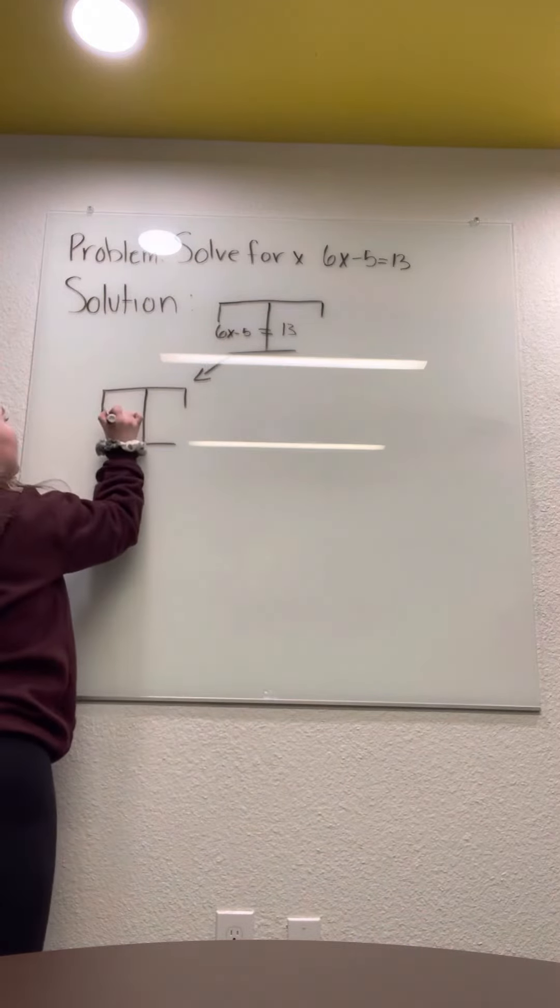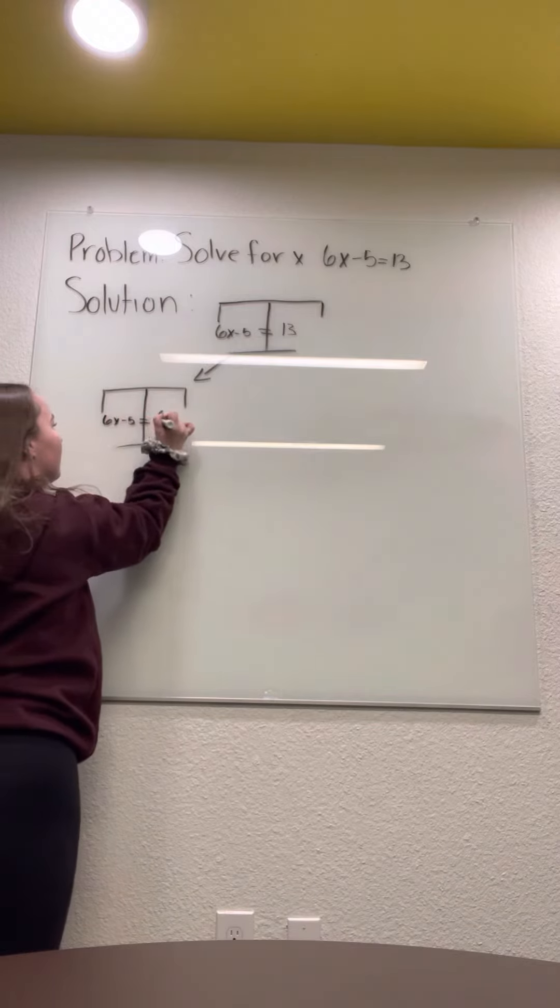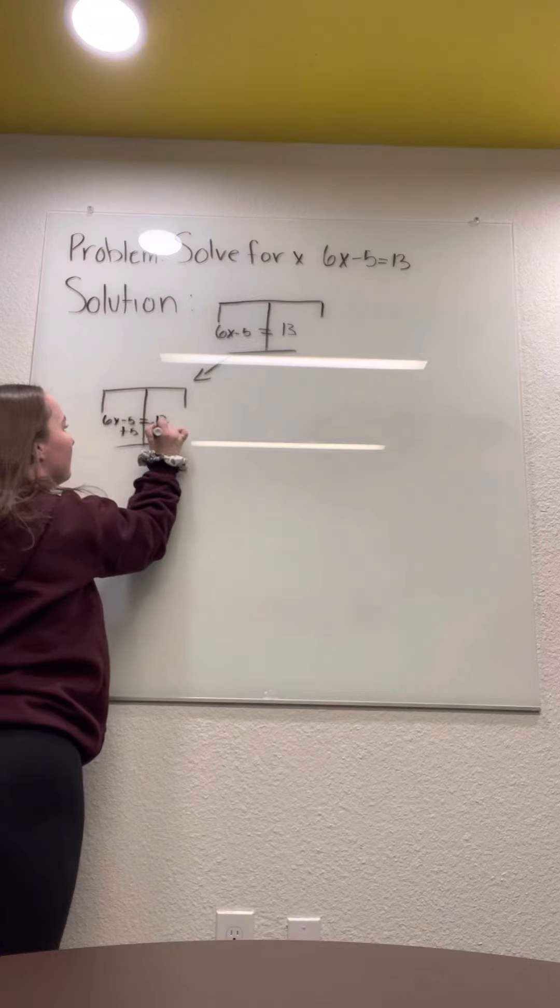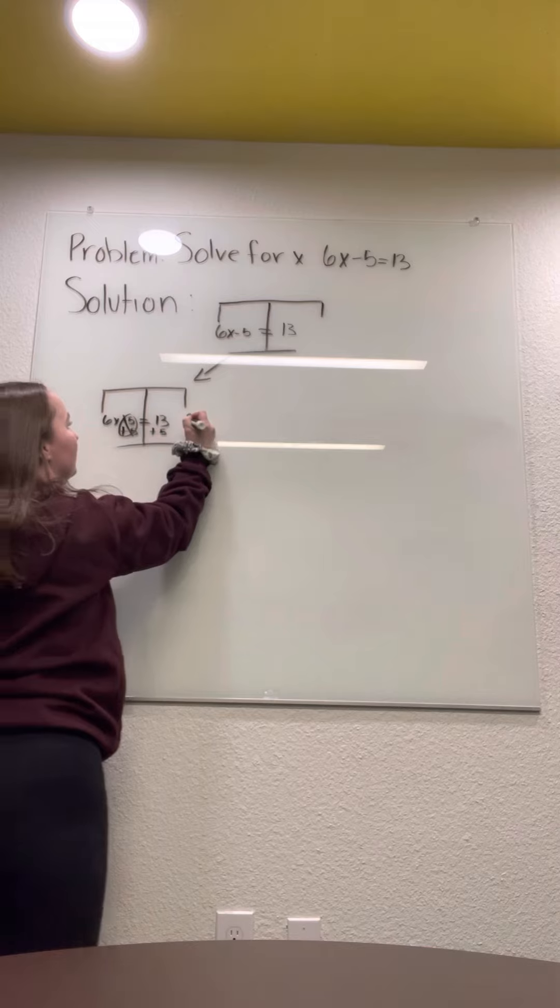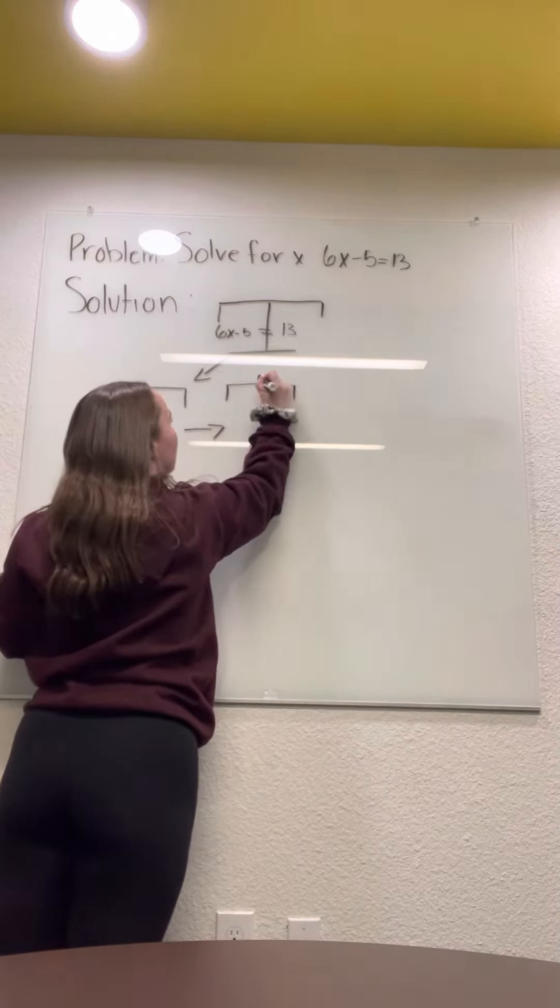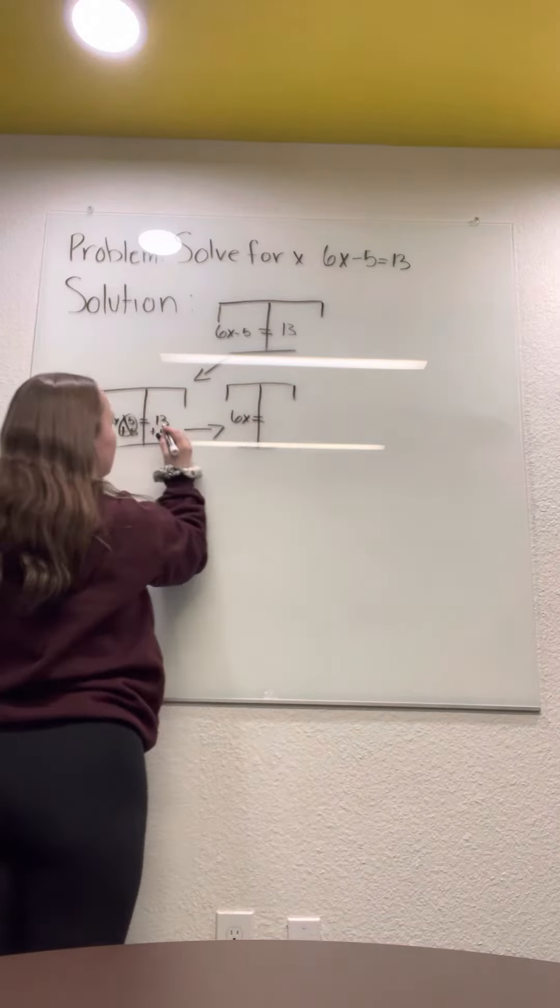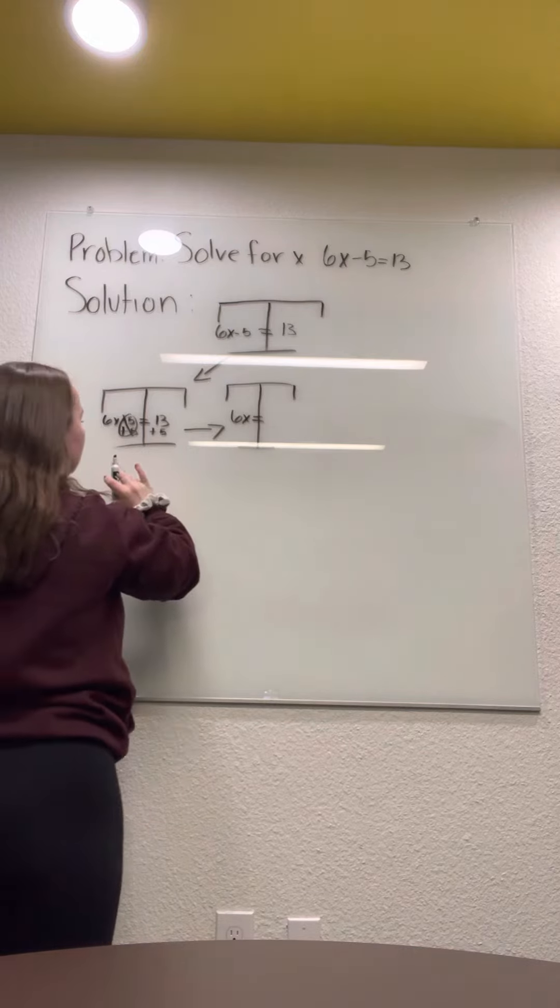By doing that, we need a plus 5 on each side. So, these two cancel out and then you'll have 6x equals 13 plus 5 which is 18.